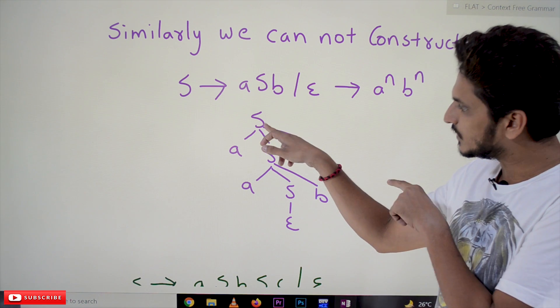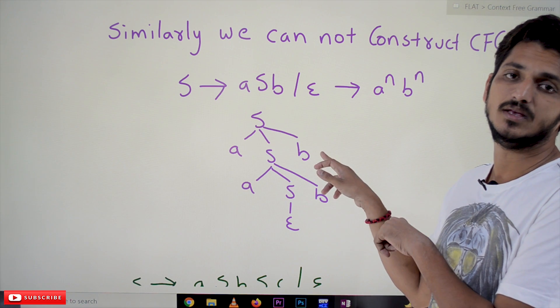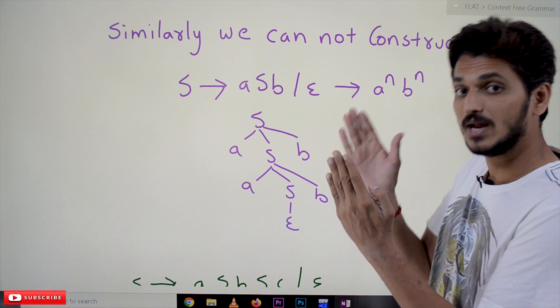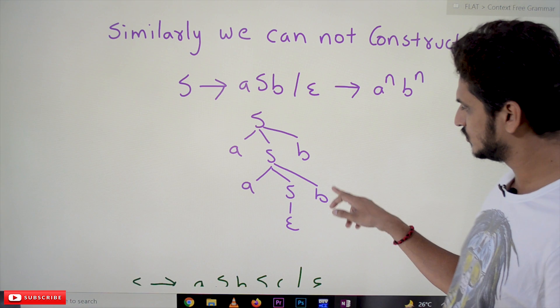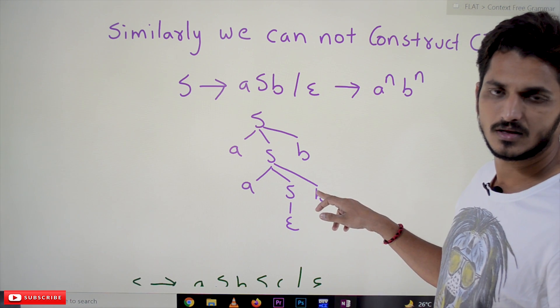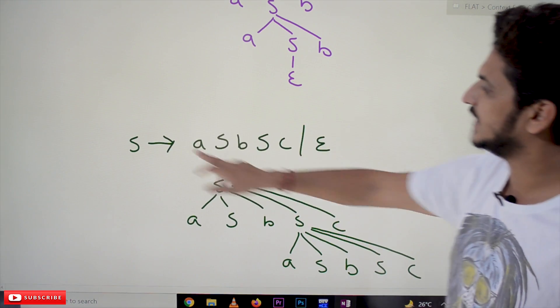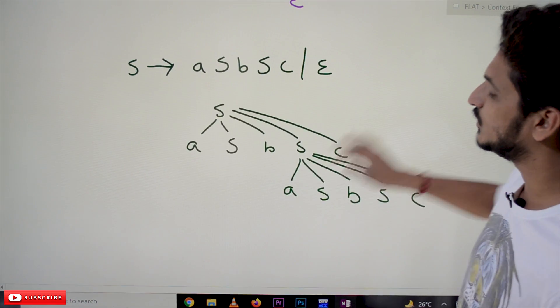So how is it getting executed? These discussions are made previously. S, aSb expansion. S, aSb. What's happening here? For every a, the production S is going to check for a b, means the equal number of a's followed by equal number of b's. For every a, if you have two S's, two b's will be checked.